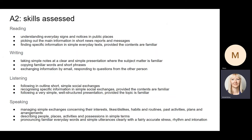As far as the reading skills are concerned, A2 students should be able to understand everyday signs and notices in public places. They should be able to pick out the main information in short news reports and messages. And they should be able to find specific information in simple everyday texts, provided the contents are familiar. So in this test, students will have to look at signs and notices and show that they can understand what those signs and notices mean.